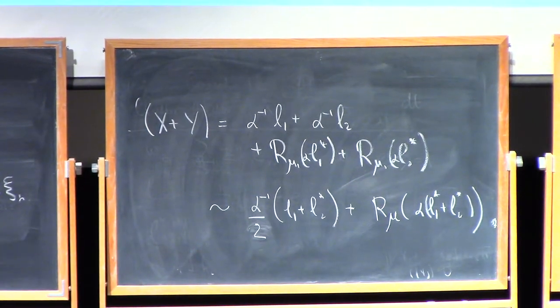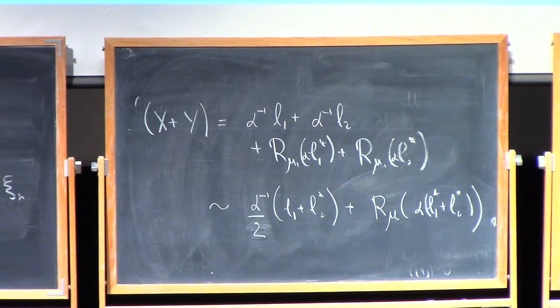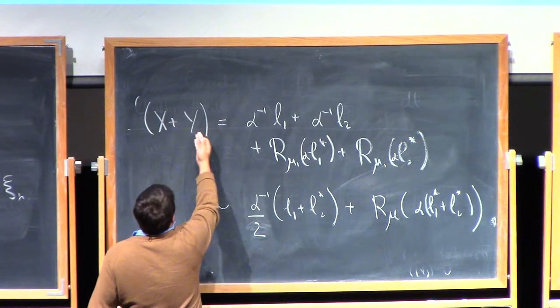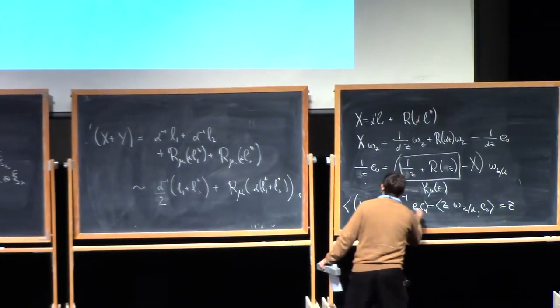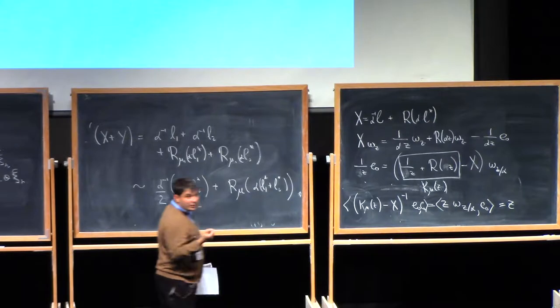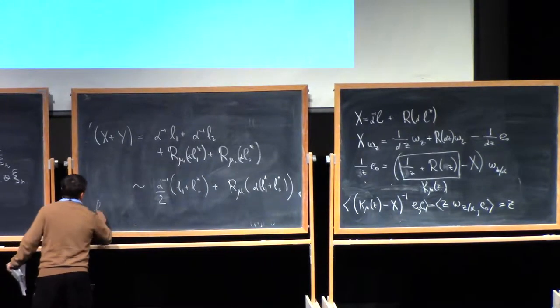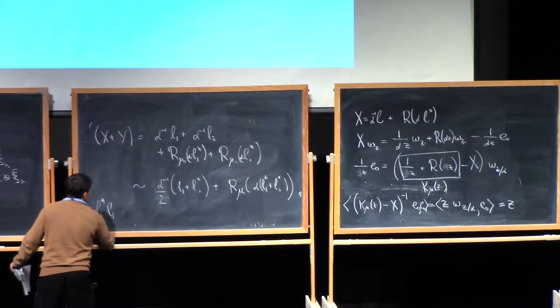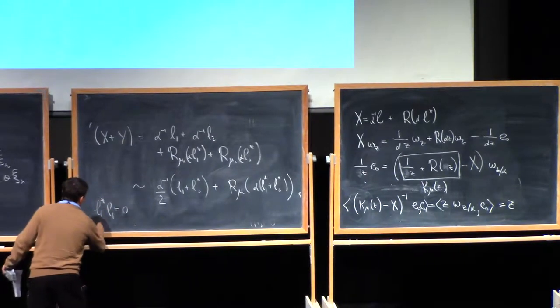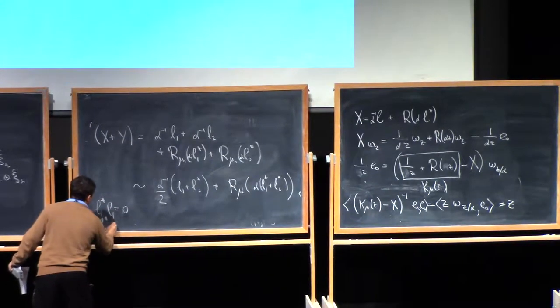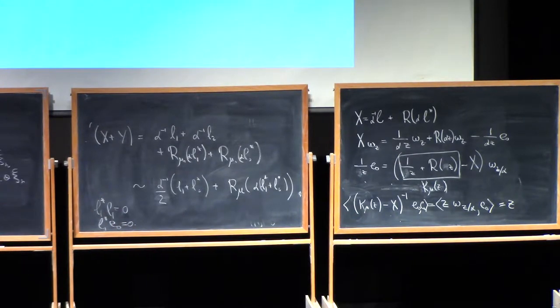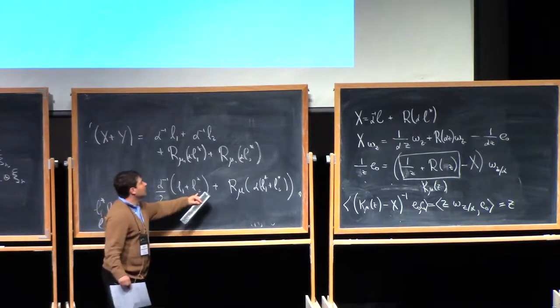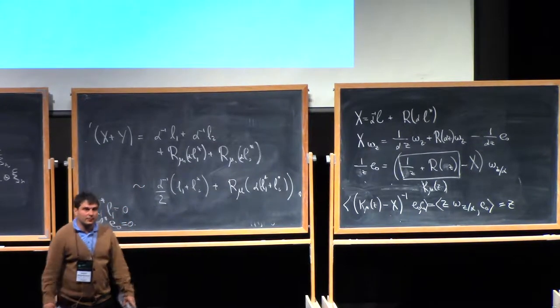So why is that? Well, again, if you think about how you would compute any power series in x plus y and apply it to E0 and dot it with E0, the essential thing is that you have to use the fact that L1 star cancels L1, that's zero. You have to use the fact that L1 kills E0. And once you know these two things, basically that's sufficient to understand how to compute any power series in L1 applied to E0.